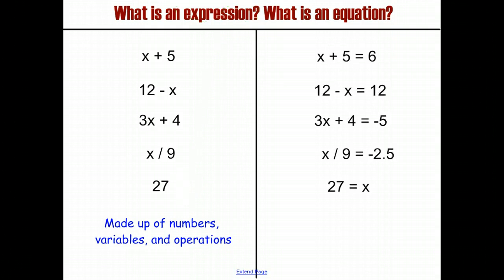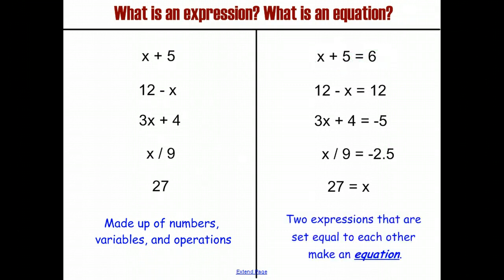Now if we add an equals sign to it, and we get things like X plus 5 equals 6, 12 minus X equals 12, 3X plus 4 equals negative 5, X divided by 9 equals negative 2.5, and 27 equals X, we've changed what we're looking at. Now instead of just having an expression, we have one expression equal to a number or another expression. And that really is just the definition of an equation. An equation is what you get when you set two expressions equal to each other.